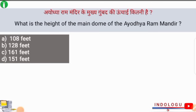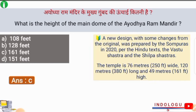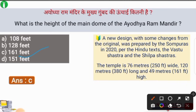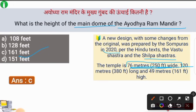What is the height of the main dome of the Ayodhya Ram Mandir? The correct answer is option number C, i.e. 161 feet. A new design with some changes from the original was prepared by the Sompuras in 2020, as per Hindu texts Vastu Shastra and Shilp Shastra. The temple is 76 meters (250 feet) wide, 120 meters in length, and 49 meters (161 feet) in height.